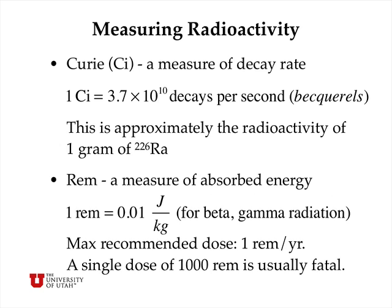There are two main ways of measuring radioactivity. If we're interested primarily in the decay rate, we usually measure radioactivity in curies, or 3.7 times 10 to the 10th decays per second. A decay per second, or a becquerel, is the SI unit of radioactivity. The curie, which is a non-SI unit, is equivalent to the radioactivity of one gram of pure radium-226.